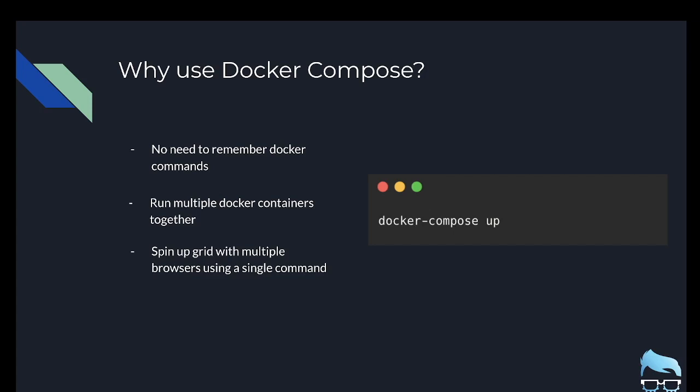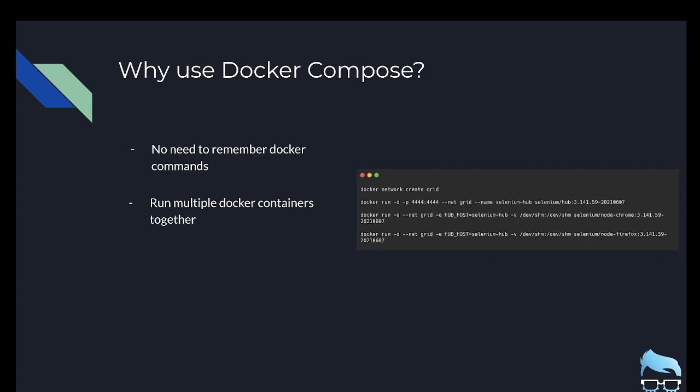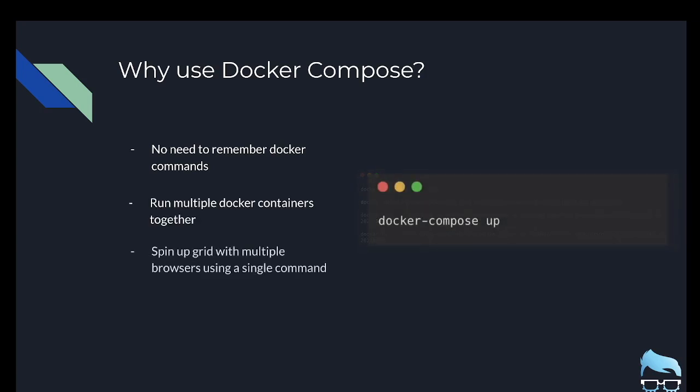All you have to do is set up one script which will do all of this work for you, and then everyone can execute that script. Essentially, you spin up your Docker Compose with just the command docker compose up. Inside that Docker Compose file you can configure everything needed to spin up your containers. In our case, we'll be spinning up a grid with multiple browsers using just one single command — much easier to remember than the complicated Docker networking commands.